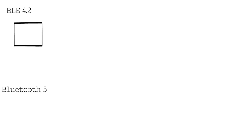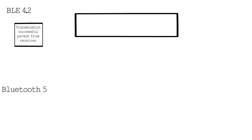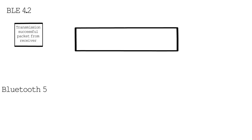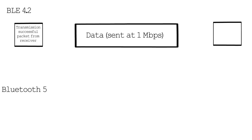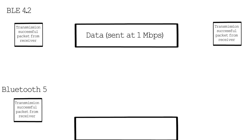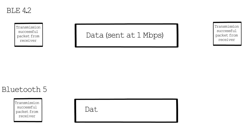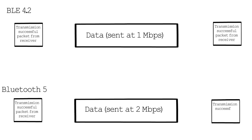What the Bluetooth 5 specification does is add, at the lowest level — what we call the physical level, because it's talking about the radio waves — they've doubled the speed of the data packets. So under Bluetooth Low Energy 4.2, the data packets were sent at one megabit per second, and in Bluetooth 5 that's been doubled to two megabits per second.